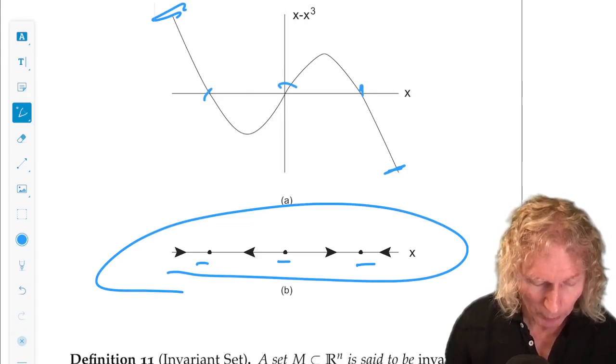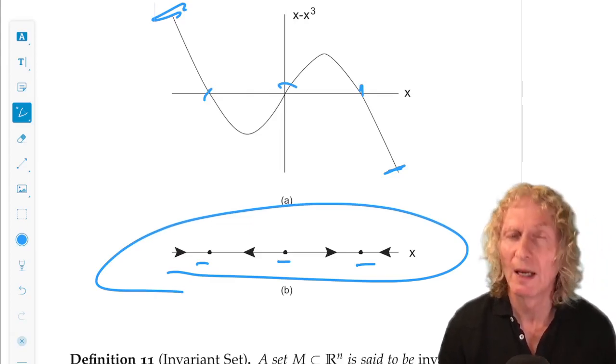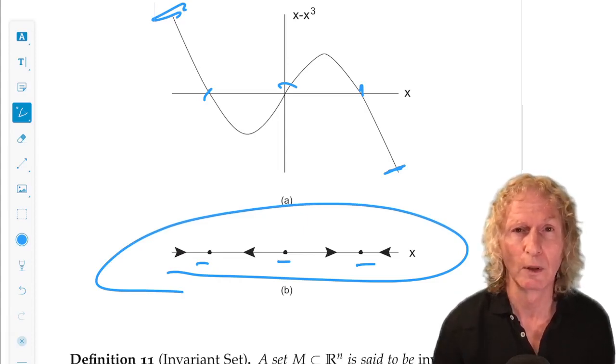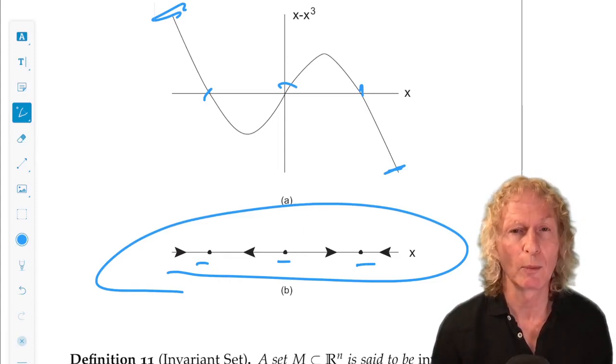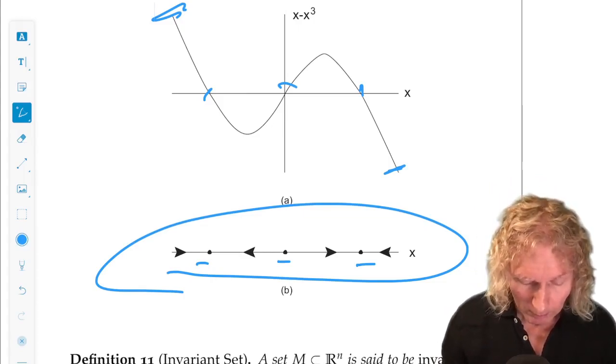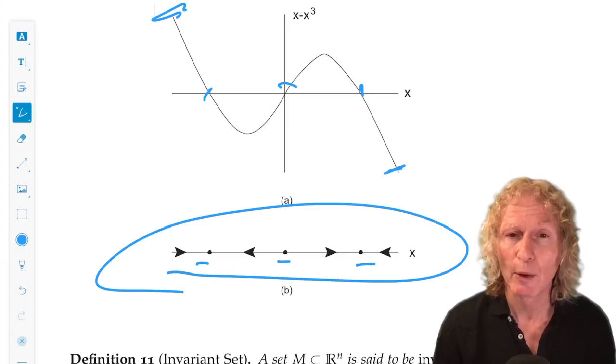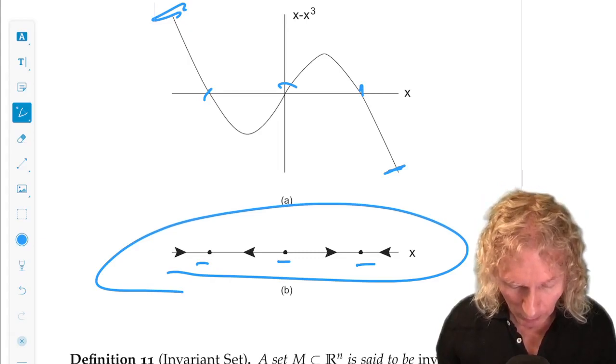And those correspond to the three equilibrium points. And the point I wanted to make is the sign of the vector field between the equilibrium points. Is it positive or is it negative? Well, it's positive between zero and one.